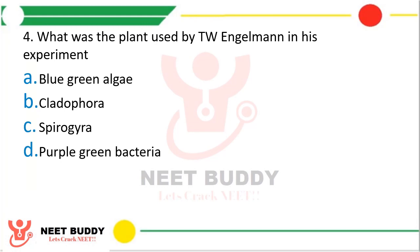Question 4. What was the plant used by T.W. Engelman in his experiment? The correct answer is option B, that is Cladophora. T.W. Engelman did the experiment using a prism where he split white light into a spectrum and showed in which spectrum of light the Cladophora accumulated the most.